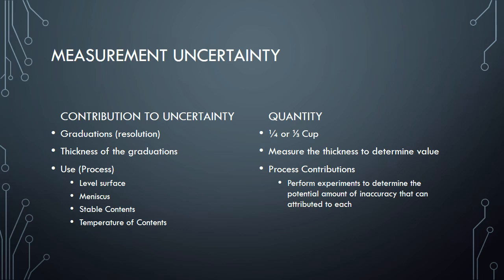These process contributions, they're a little bit different. What we do here is we want to perform various experiments to try to figure out how much each one of these things is. To determine how much could come from a surface that's not level, we may take and take some measurements with the measuring cup and then tilt the table a degree or two in one direction, make some more measurements, tilt it back in another direction - maybe to the left, to the right, to the front, to the back - and see what kind of measurements we're actually getting at that point.